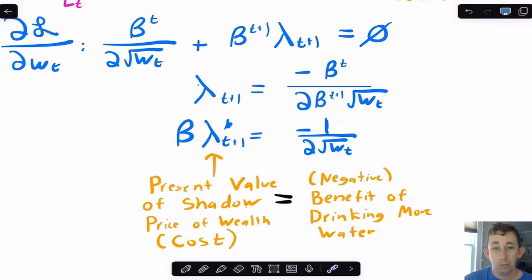If I scroll down a little bit, I'm just going to rearrange this fraction. What you're going to see is beta times lambda T plus one star is negative one over two times the square root of WT. That's the math, but let's talk about what it means. This right here is the shadow price of wealth for tomorrow, or basically, this is how much I'd be willing to pay to have a little extra water in the tank when I wake up tomorrow. Because that's about tomorrow, I need to make that into present value, and I do that by multiplying it by beta.